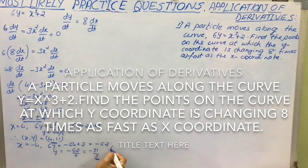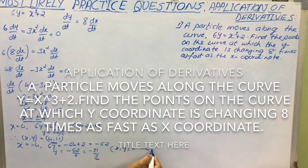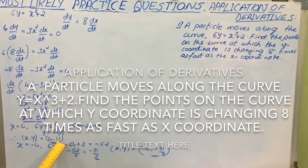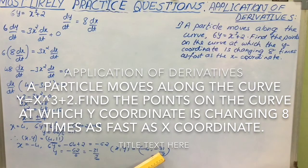Therefore the second point which is on the curve is equal to minus 4, minus 31 by 3. Therefore the required points are 4, 11 and minus 4, minus 31 by 3.